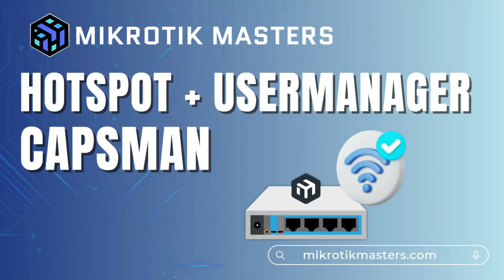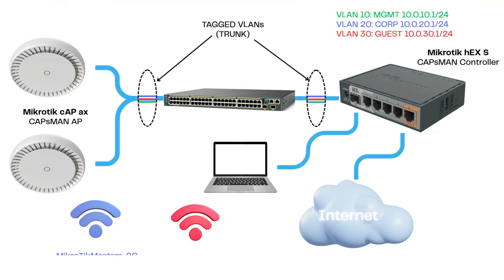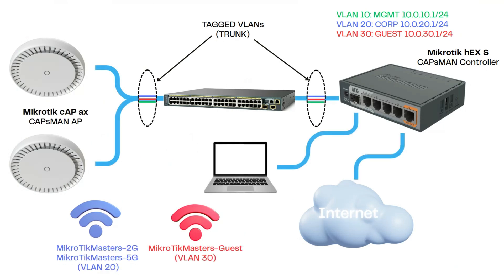Welcome to this video. We're doing another CAPsMAN video — this time we're going to look at hotspot and using User Manager. My setup has a HEX acting as router and CAPsMAN controller, a Cisco switch trunking VLANs, and two access points tagged on VLAN 10 for management, VLAN 20 for corporate SSID, and VLAN 30 for guest. Guest is what we'll enable hotspot on, and then we'll set up User Manager to manage users and show some customization.